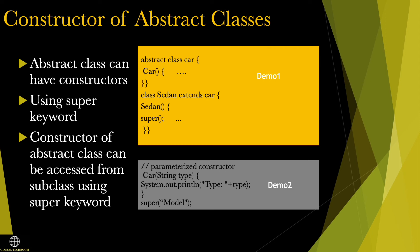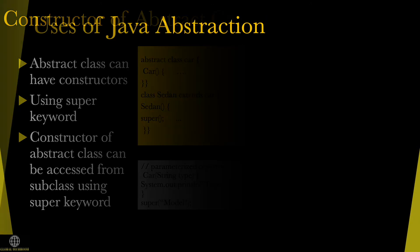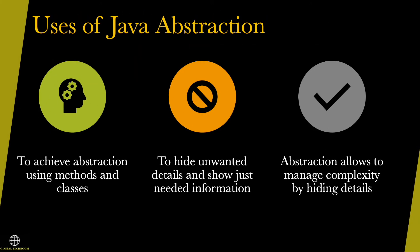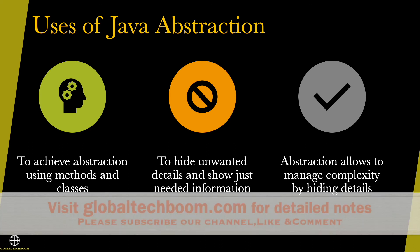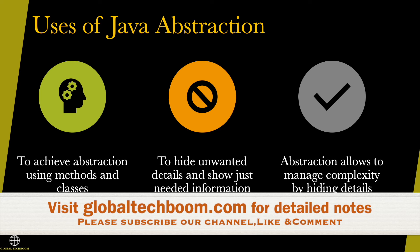The next program lists the way to access a parameterized constructor. Now let us see the uses of Java abstraction. The main purpose is to achieve abstraction using methods and classes to hide unwanted details, showing only the needed abstract information. Abstraction allows us to manage complexity by hiding details. A practical example of abstraction would be an automobile using brakes — we use the brake to decrease speed but may not know the detailed internal functions of it.